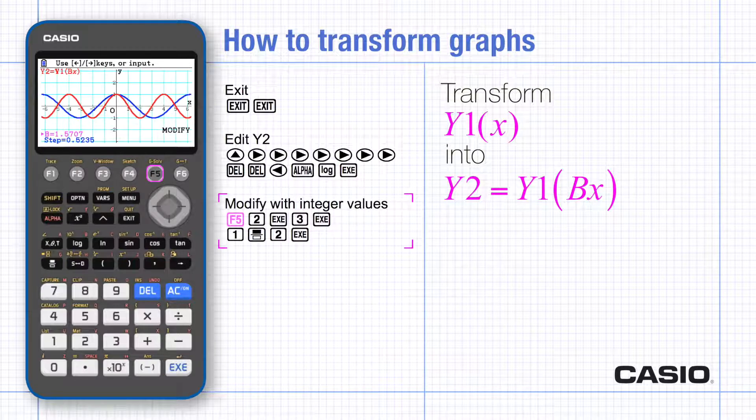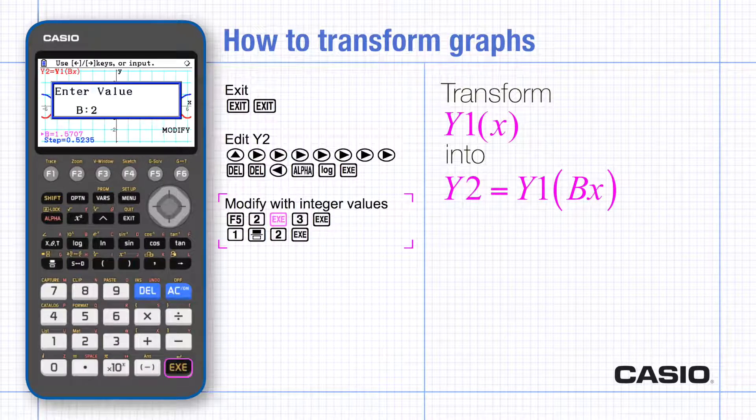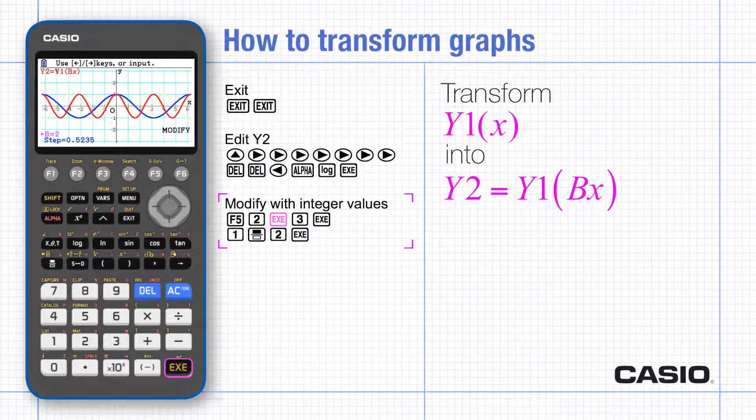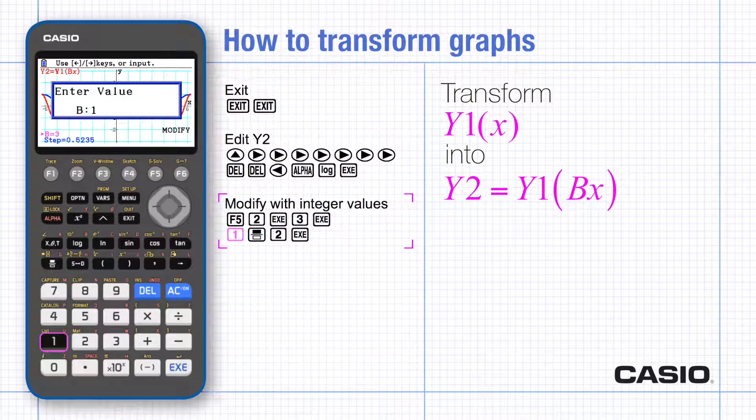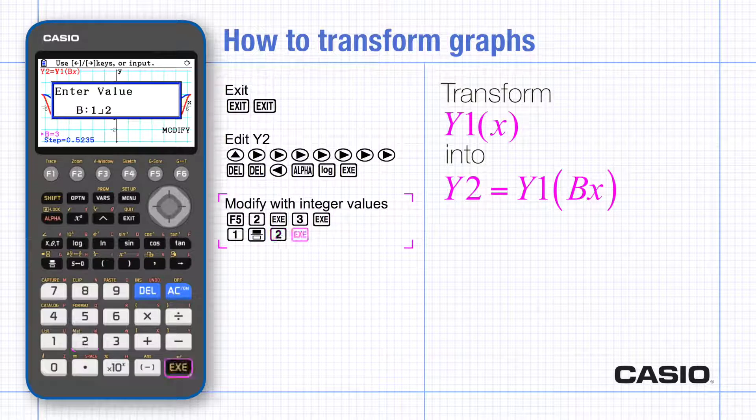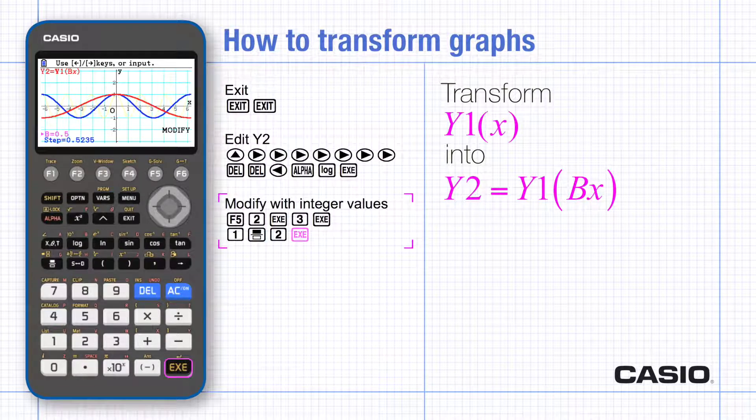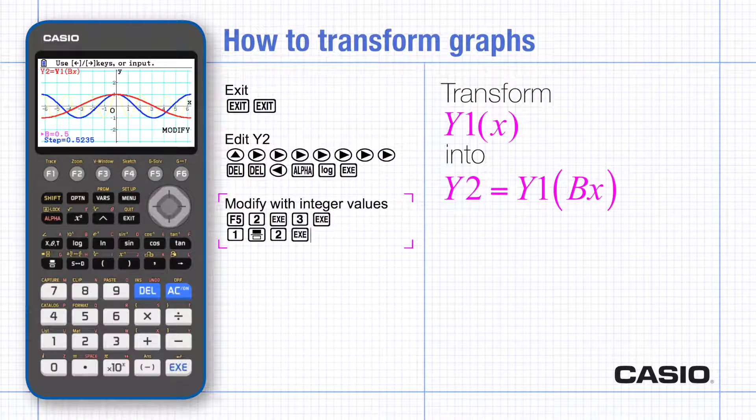Now modify. The previous value of b has been used so choose integer values for b by typing them in and then fractional values to see the effect of changing b. Notice the constant now stretches the graph in the x direction. Explore to find a link between the value of b and the scale factor of this stretch.